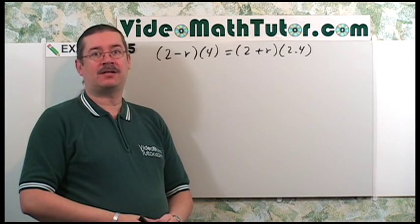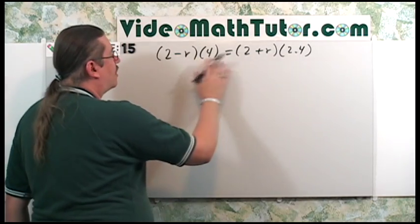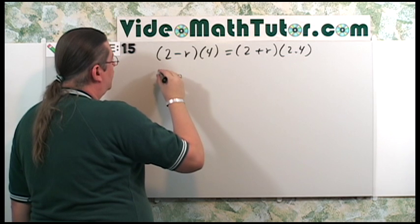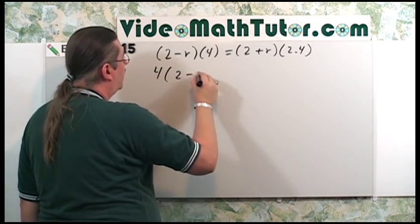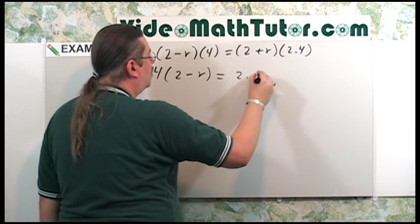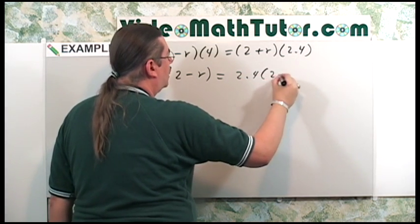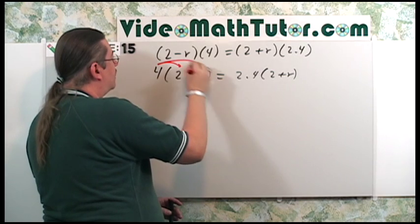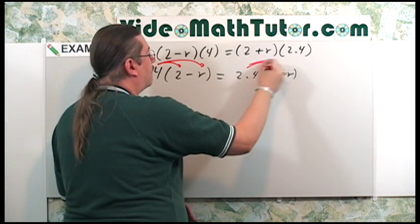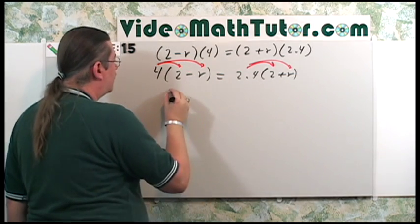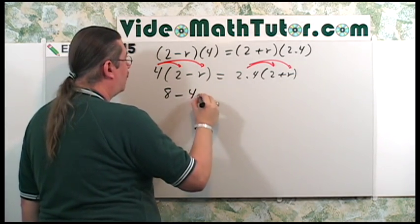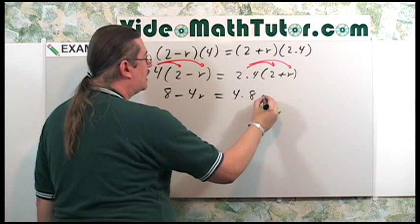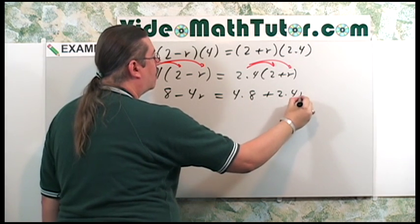My first step to solve this equation is to rewrite. So I'm going to put my numbers in front of these terms. It just looks a little bit nicer. So it's going to be 4 times the quantity 2 minus r equals 2.4 times the quantity 2 plus r. Now, I'm going to carefully distribute the numbers. That's going to give me 8 minus 4r equals 4.8 plus 2.4r.